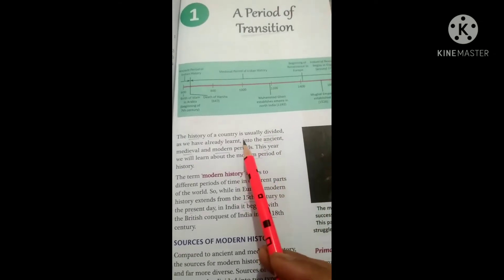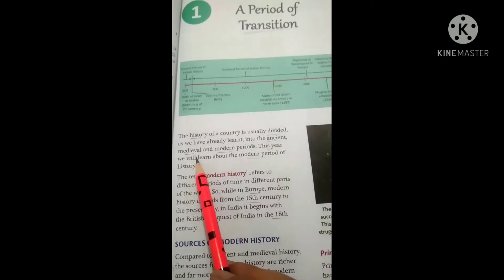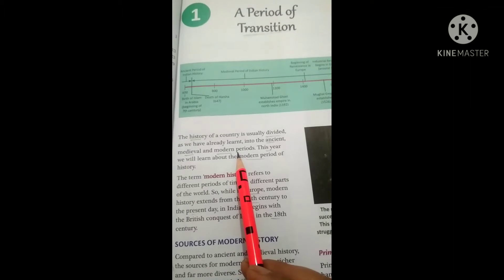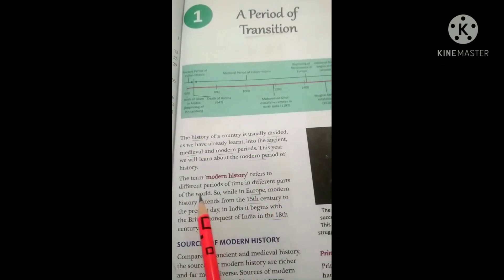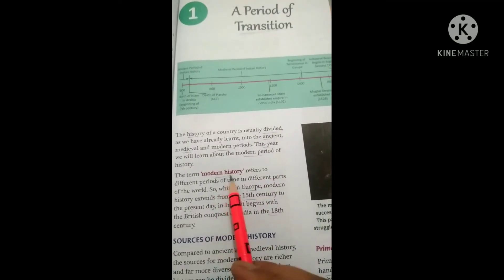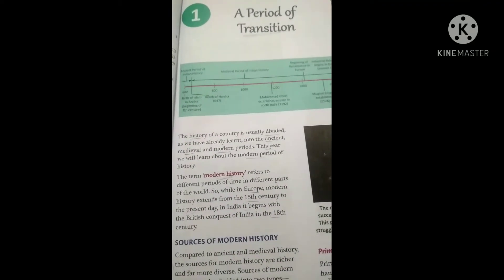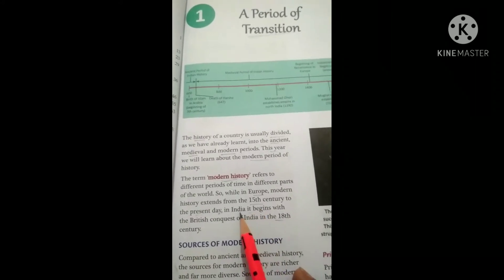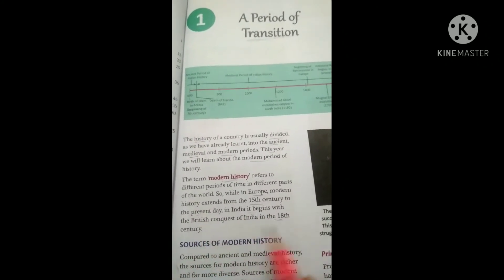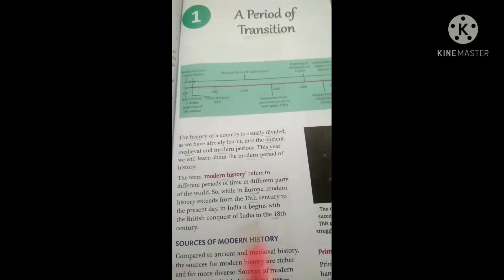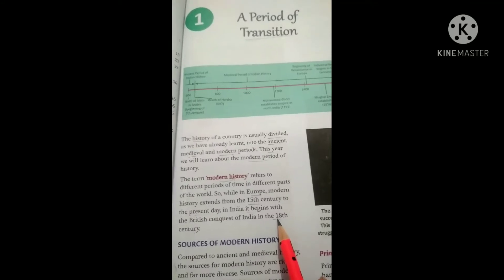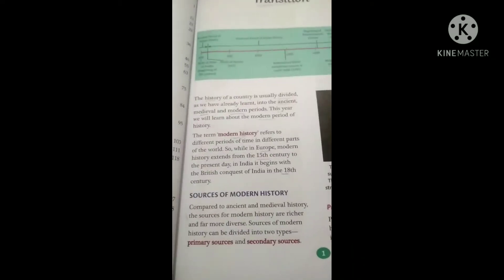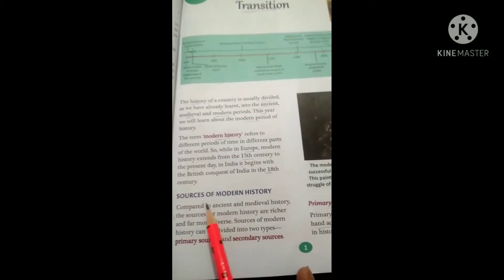History of a country is usually divided into three phases: ancient, medieval, and modern. In the sixth standard you learned about ancient history, in the seventh medieval, and now in the eighth you will learn about the modern period. The term modern history refers to different periods of time. It started from the 15th century in Europe, but in India the modern period started from the 18th century, with the arrival of the British.